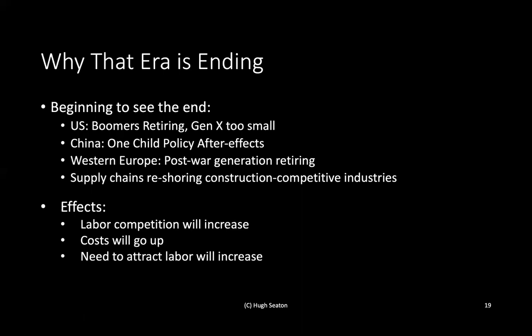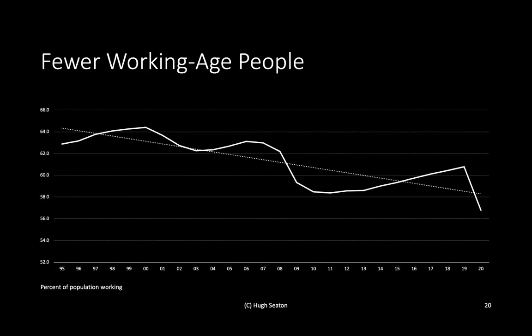The effect is that labor competition will increase, costs of labor are likely to increase, and the need to attract labor will obviously increase. For construction technology, that means the industry is not going to have enough skilled labor — this problem isn't going away. What you see in this graph is the percentage of the population working is already in secular decline. You're seeing mostly Boomers retiring, but that will continue as the generation behind Millennials enters the workforce as a smaller cohort.